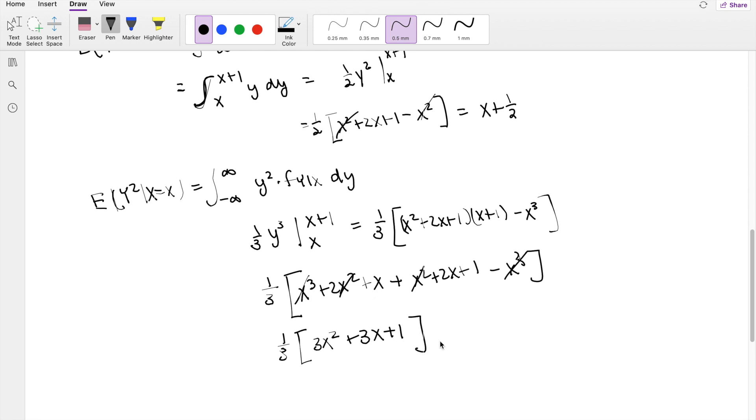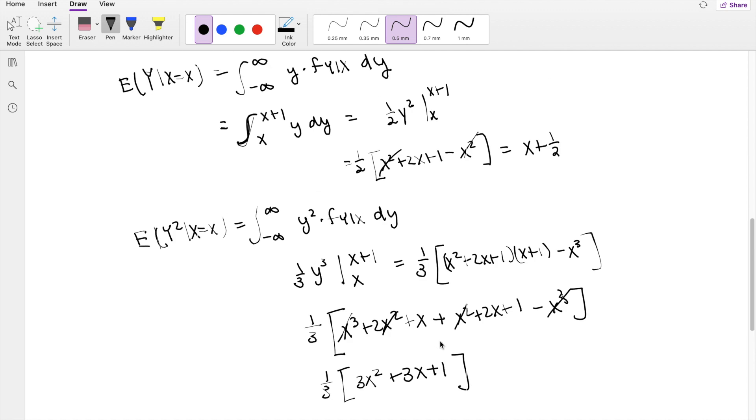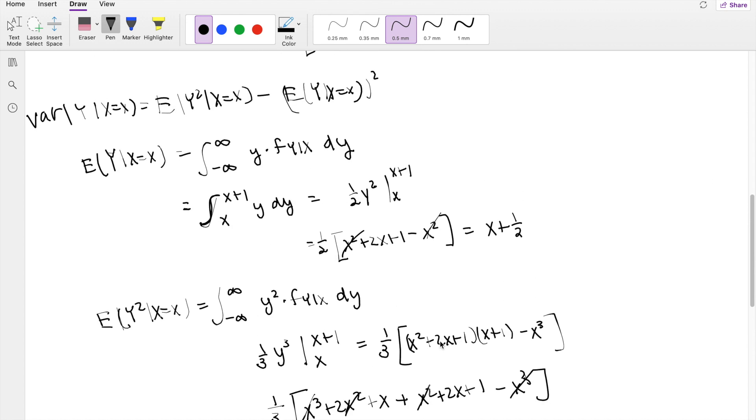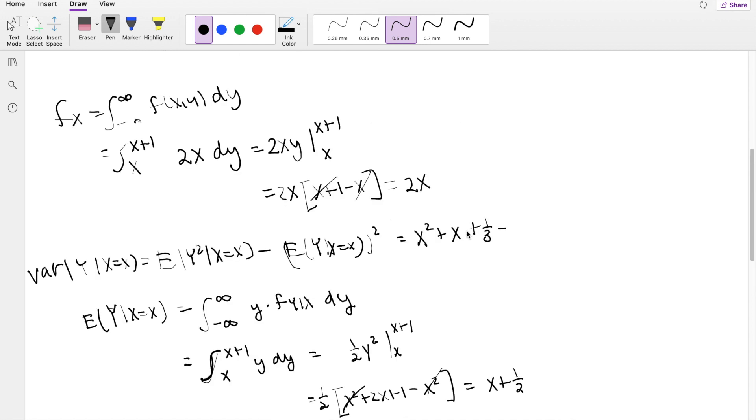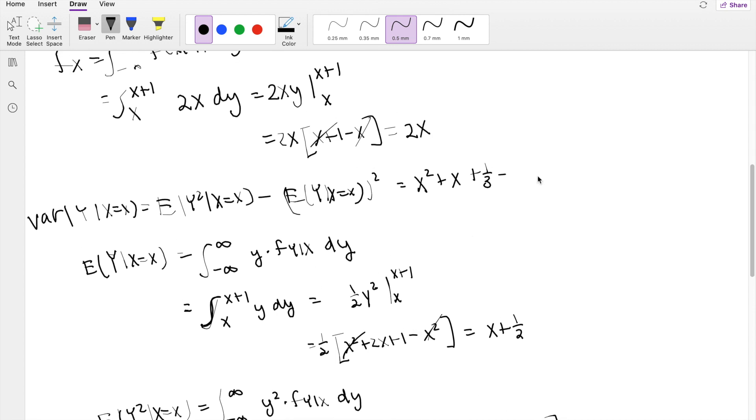Yeah, that's it. Okay, so then putting it back in our variance formula, the second moment here, it's going to be equal to X² plus X plus 1/3 minus the first moment here, which is (X plus 1/2)².